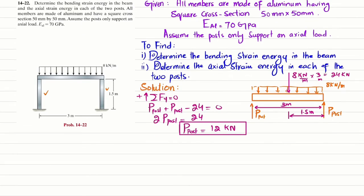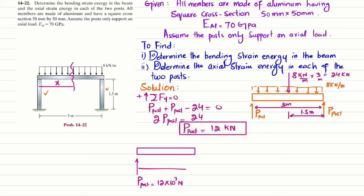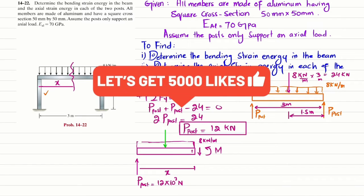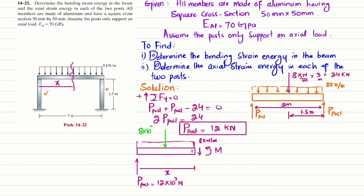We will cut this beam at any length X and draw the free body diagram to find the equation for the moment. On the left portion, we have the reaction from the post, P_post, equal to 12×10³ N. The total cut length is X, and there is a uniformly distributed load of 8 kN/m. Converting this to a point load gives 8×10³ multiplied by X, acting at a distance of X/2 from the cut.